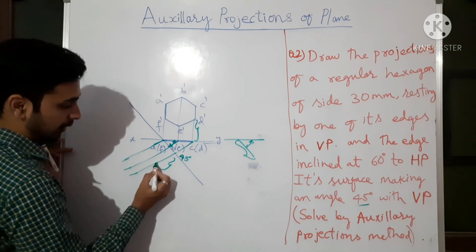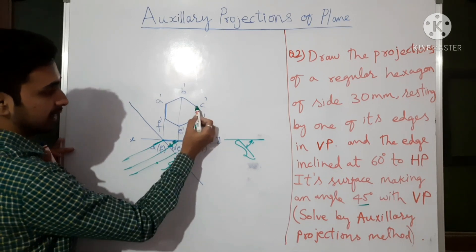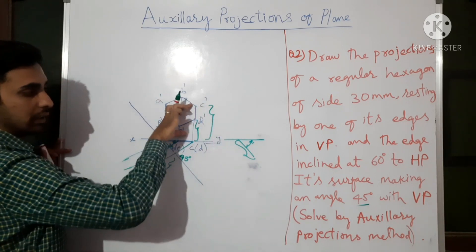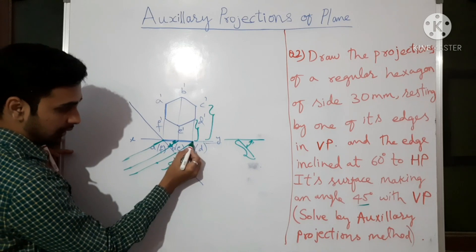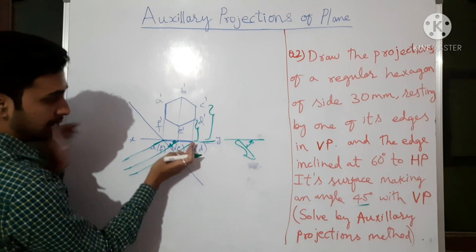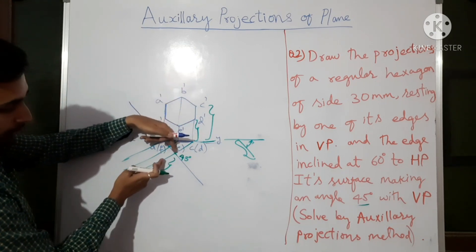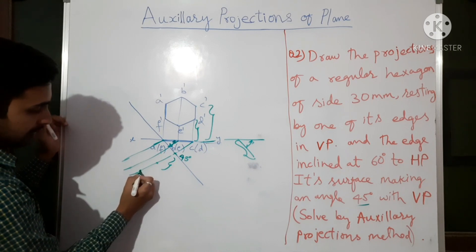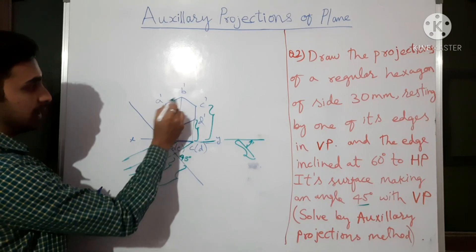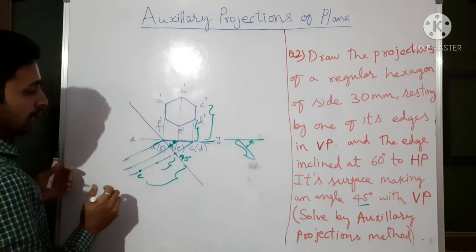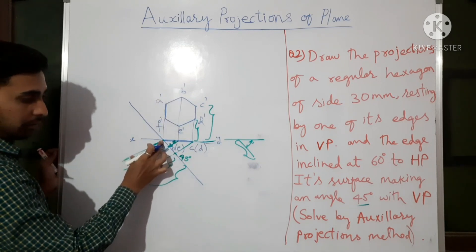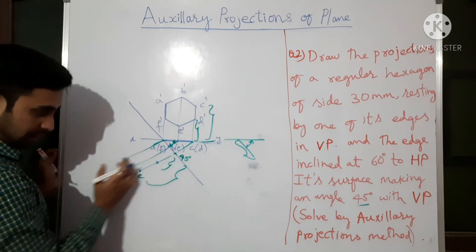Point D is at a certain distance from the old XY line — assume D is somewhere here. Then measure C's distance, which is a bigger distance. You measure from the old XY line and transfer that measurement from the new XY line. Similarly measure and transfer all other points: E, B, F, A.